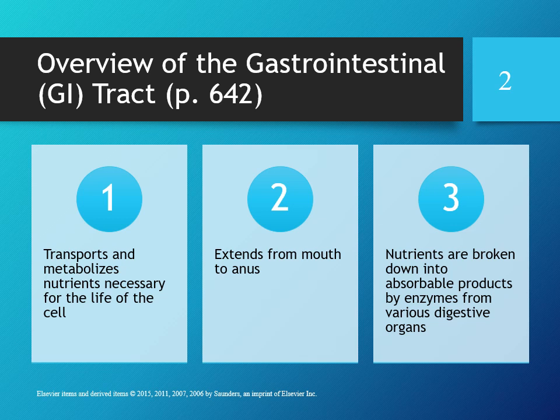Let's go through the overview of the gastrointestinal tract. The GI tract transports and metabolizes nutrients necessary for the life of the cell. It's important for our bodies to distribute different nutrients to the different tissues. We talked about cellular respiration in prereqs — the use of glucose and how it's needed for cells to create ATP, which is the energy they use.